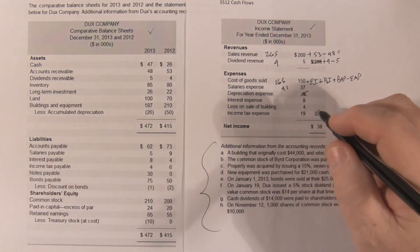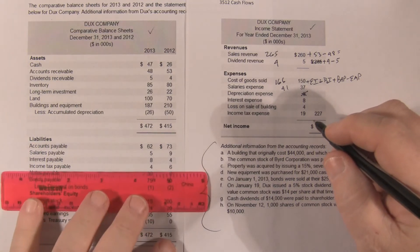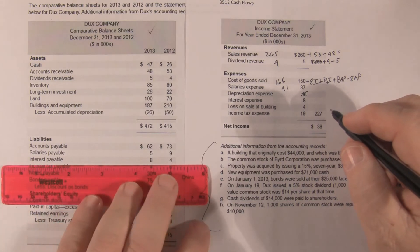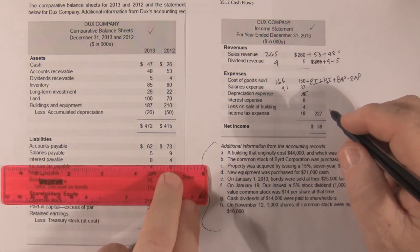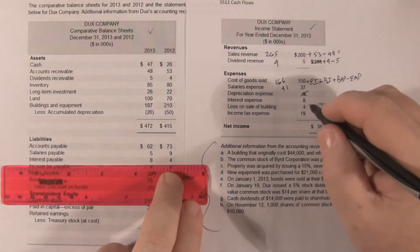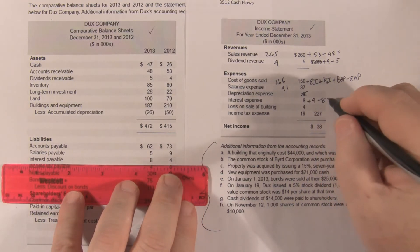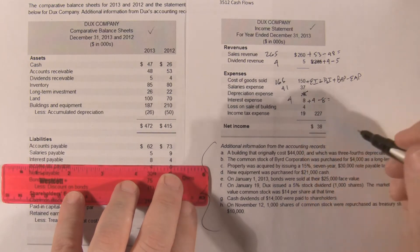Let me make sure I'm writing down the right numbers. Interest payable, our beginning, we have to pay that, so we have to add 4. And our ending interest payable is minus 8. So that's 4.